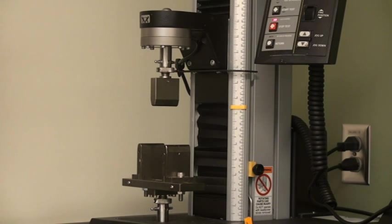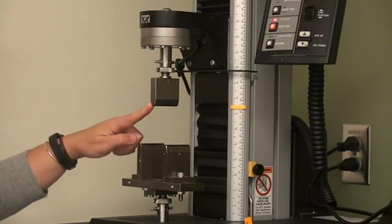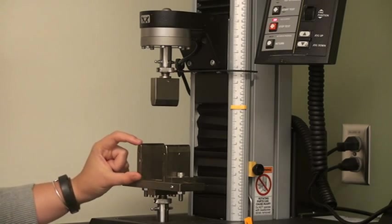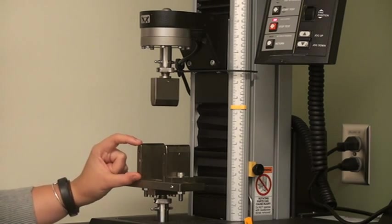The first thing you must do is set the safety stops. Slowly jog the actuator down until the tip of the upper anvil is about halfway between the tips of the lower anvils and the base plate.